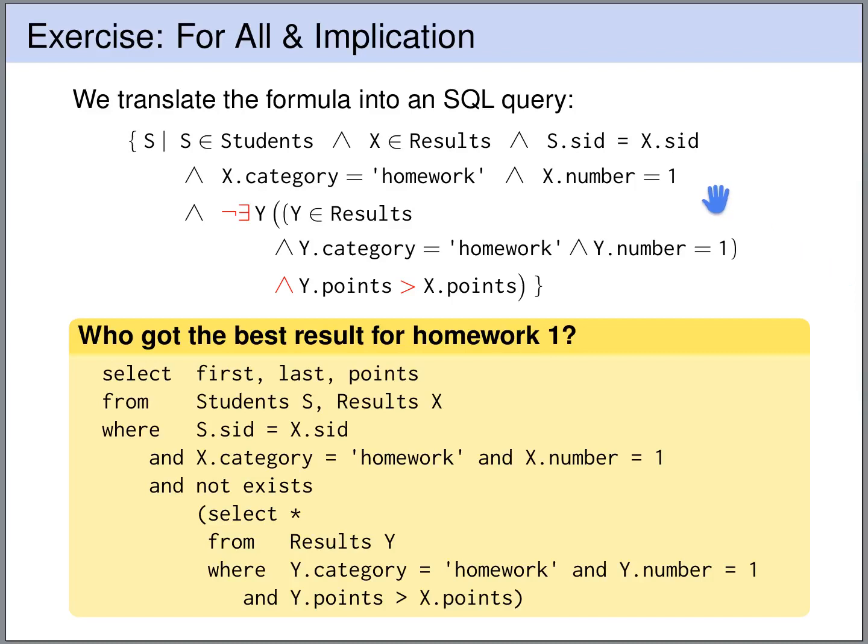Now the translation of the predicate logic query to an SQL query is almost trivial. We see here that we query the students table with tuple variable s and the results table with tuple variable x. And exactly the same we do in SQL, we query students and the results table with tuple variables s and x respectively. The join condition goes in the where clause. The condition that we look at homework 1 likewise goes in the where clause. The not exists is translated to not exists. The subquery, we query the results table with tuple variable y, gives us in SQL a subquery with tuple variable y, and these conditions go one to one in the where clause of the subquery.